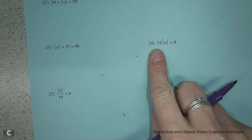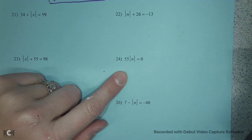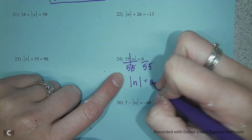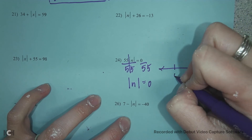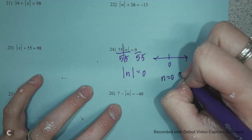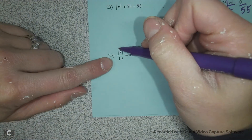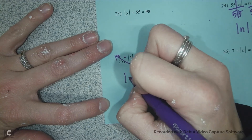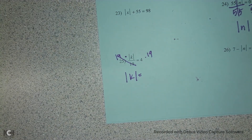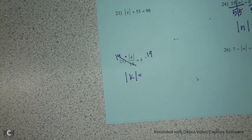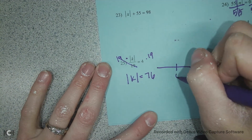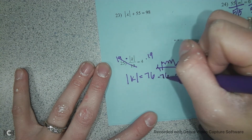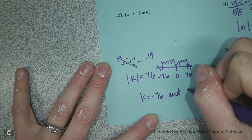Just remember, like on number 24, when your variable is getting multiplied by the absolute value, you have to do the opposite, and the opposite is divide — this is one students mess up on a lot. Then we have the absolute value of n equals 0 divided by 55, which is 0. I'm standing at 0, n moves 0 spaces from 0, so n equals 0 — this is a one solution. And on number 25, k is getting divided by 19, so multiply each side by 19. The absolute value of k equals 4 times 19, which is 76. I'm on a number line at 0: move 76 spaces this way to get positive 76, and move 76 spaces this way to get negative 76. So k equals negative 76 and k equals positive 76.